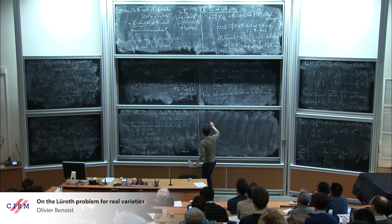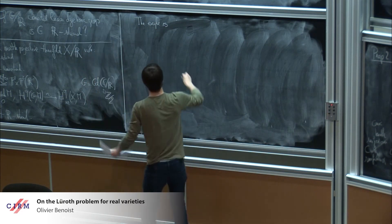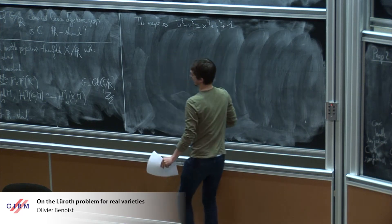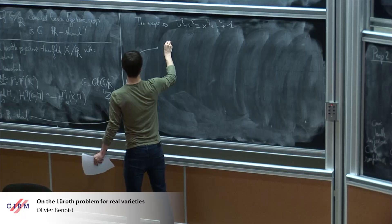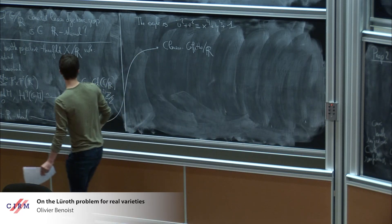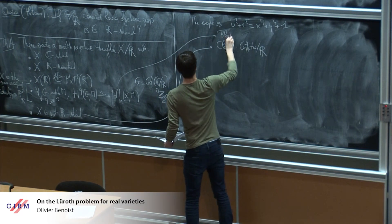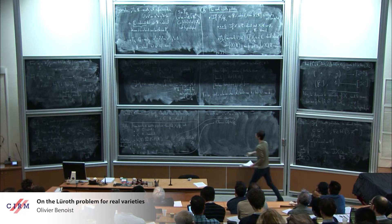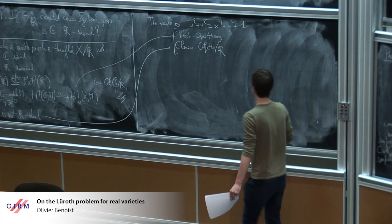The example is exactly the one described above: the R-variety U² + V² = X⁴ + Y⁴ + 1. Non-R-rationality follows from Clemens-Griffiths over R. The triviality of unramified cohomology is non-trivial and relies on Bloch-Ogus theory.